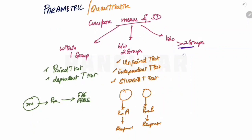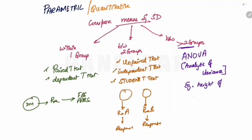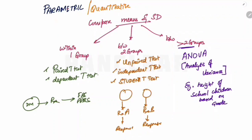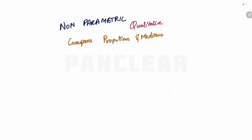For more than two groups, we use the ANOVA test — full form: Analysis of Variance. In multiple groups, we study one particular parameter. For example, height in one school across many standards (classes). We find the mean height of each standard and compare them with each other. For this comparison, we use the ANOVA test.